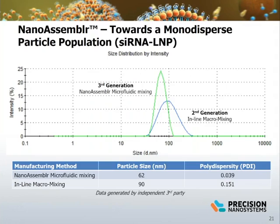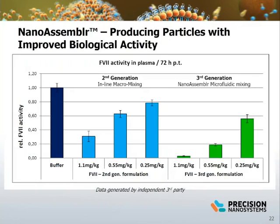The NanoAssembler microfluidic mixing has outperformed previous-generation nanoparticle production using another inline mixing technology. The siRNA lipid nanoparticle produced using the microfluidic mixer yielded a monodisperse particle with a lower mean particle size compared to the inline macromixer. The higher quality particles made on the NanoAssembler bench top also resulted in elevated in vivo activity compared to the inline macromixer.